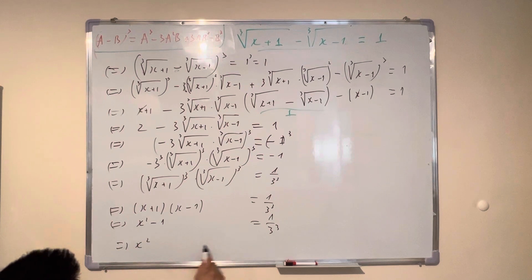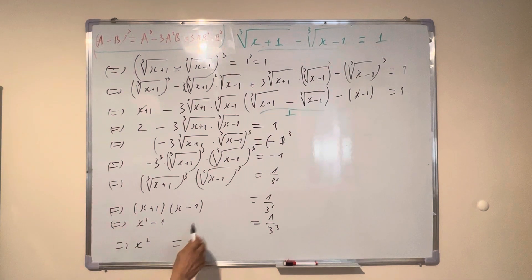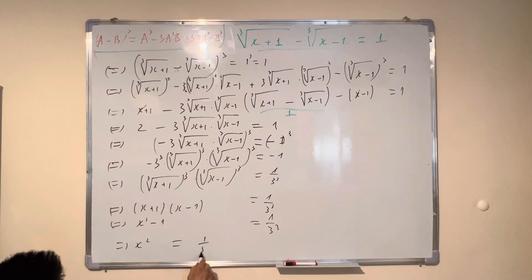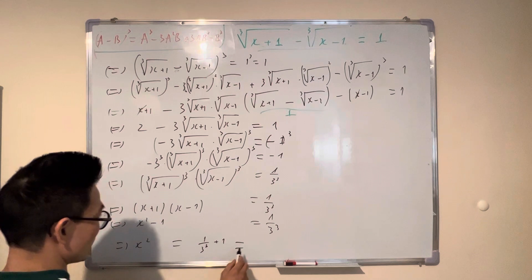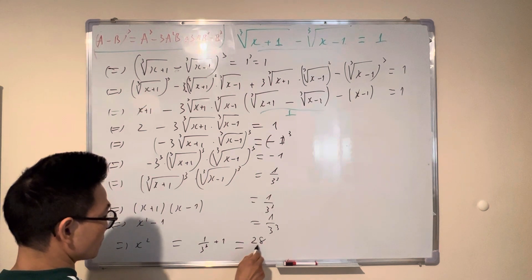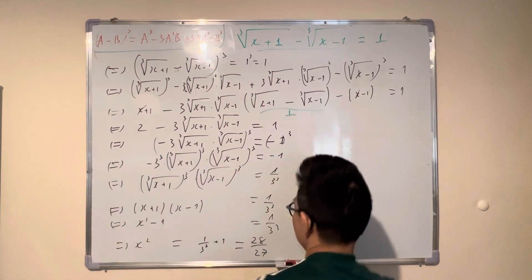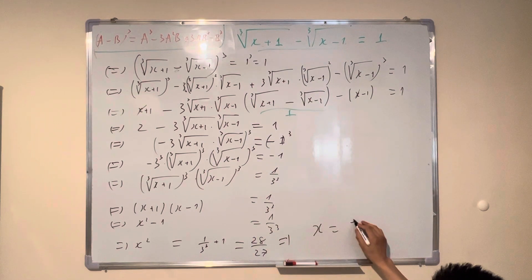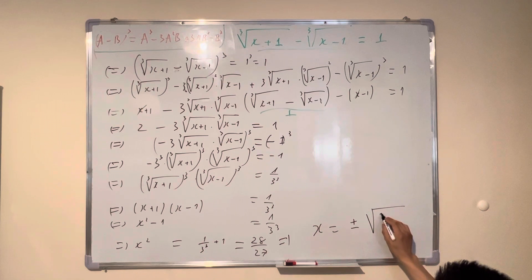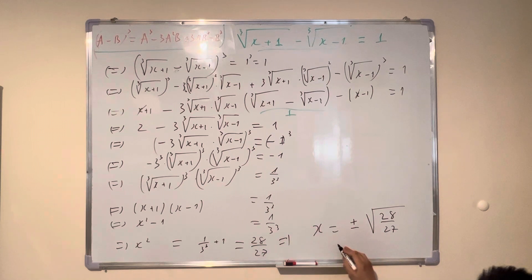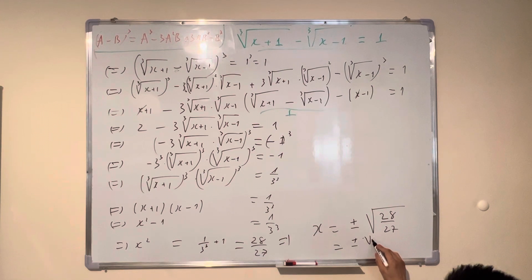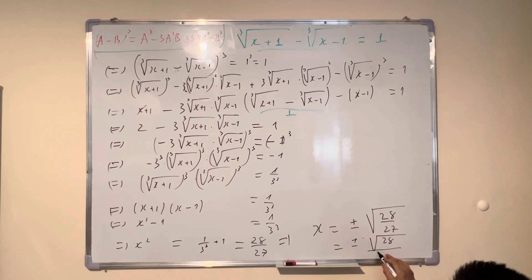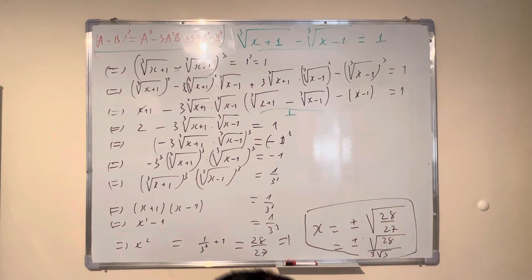So x² equals: add 1 to both hand sides, that one plus 1 equals one over 27 plus 1 equals 28 over 27. So x equals positive or negative square root of 28 over 27. Or you can write it as square root of 27 with 3 outside times 3, you can factor 28 as 4 times 7 and 27 as 9 times 3 outside. That's it. Thank you for watching.